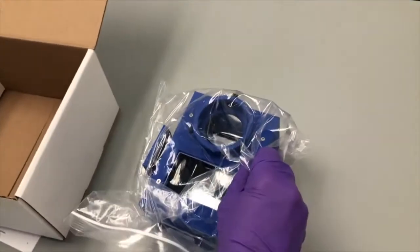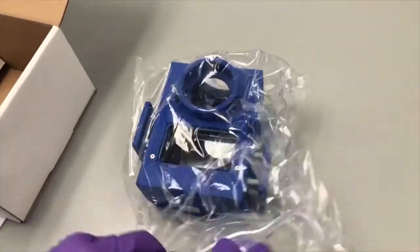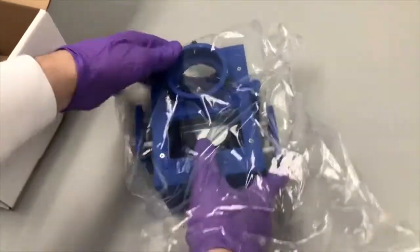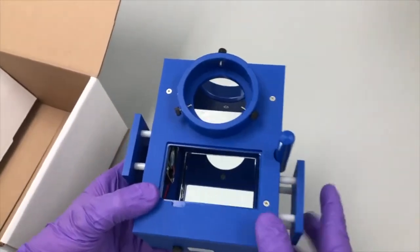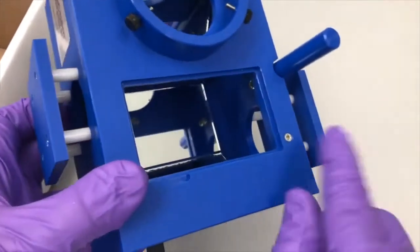The photoredox box itself comes wrapped to avoid scratches to the reaction chamber mirrors. Once you have removed the photoreactor from the plastic, you can view the various mirrors that are placed at specific angles throughout the reaction chamber.